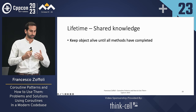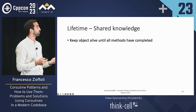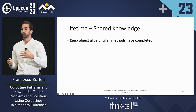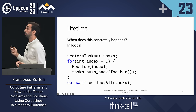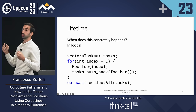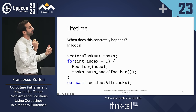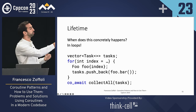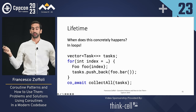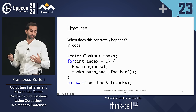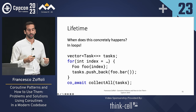So in our shared knowledge, we have a new entry: we need to keep an object alive until all its methods have completed. This commonly happens in loops — for example, when starting many tasks in parallel inside a vector, if the object foo is local to the loop body, accessing it via the task is invalid. One solution is to also store foo inside the vector so that its lifetime lasts long enough.